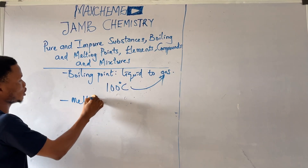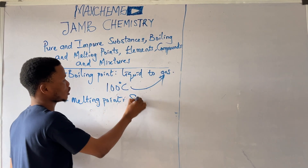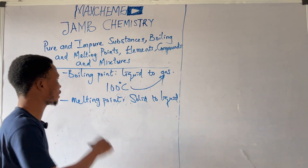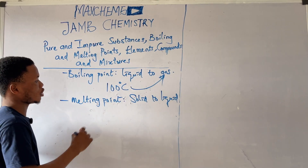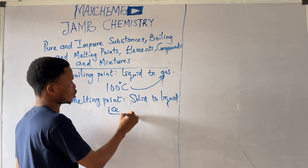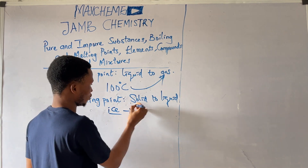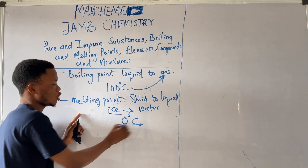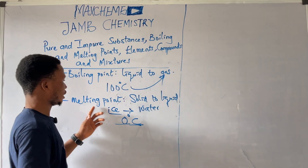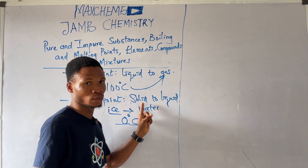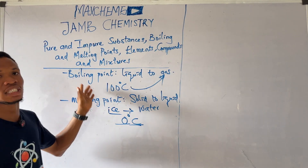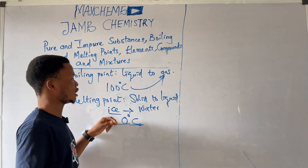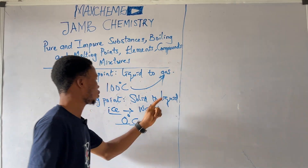And melting point is the temperature of a solid changing to liquid. For example, let us take our ice changing to pure water — that is our liquid. Water will melt at zero degrees Celsius. So at zero degrees Celsius, water will convert from solid to liquid. So boiling point is the temperature that a substance will change from liquid to gas, while melting point is the temperature that a solid will turn to liquid.